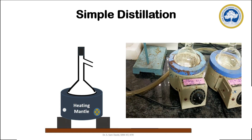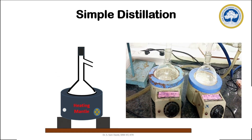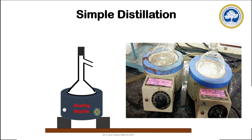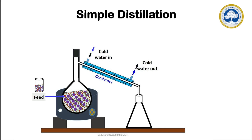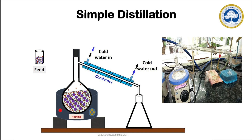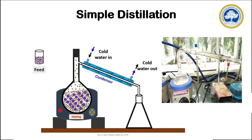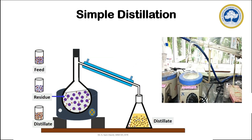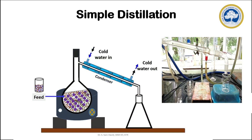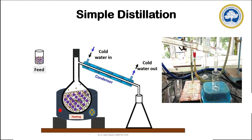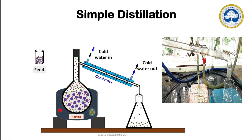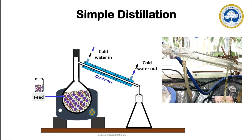In a simple distillation experiment, the feed mixture will be taken in a round bottom flask and it will be heated using a heating mantle. During heating, the temperature of the liquid mixture rises up. When the temperature reaches the boiling point of any component in that liquid mixture, that particular component will become vapor. The generated vapors will rise up and be collected separately by condensing this vapor into liquid. Along with the vapor of the low boiling component, few moles of other components also will become vapor and travel along with these vapors.